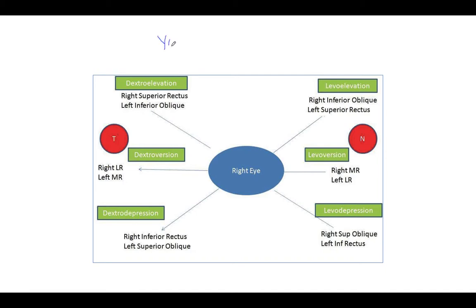We would talk about the yoke muscles. This is the primary gaze, this is the levo version, the dextro version — seeing right and upwards is the dextro elevation, then levo elevation, levo depression, and dextro depression. Remember, in yoke muscles one muscle should be from the right side and the other muscle should be from the left side.